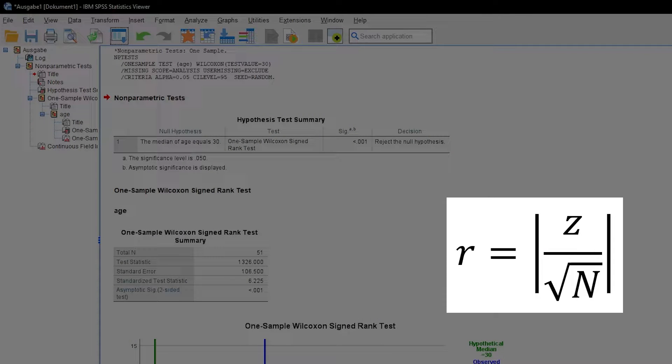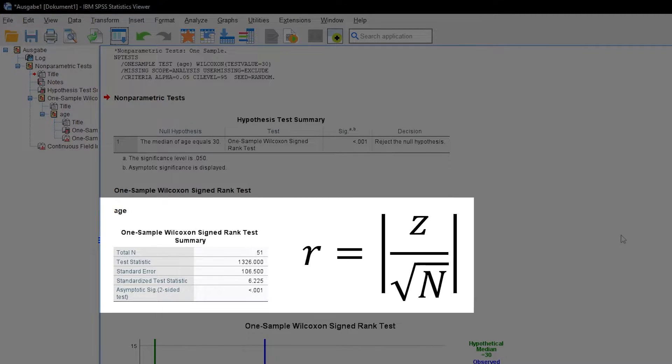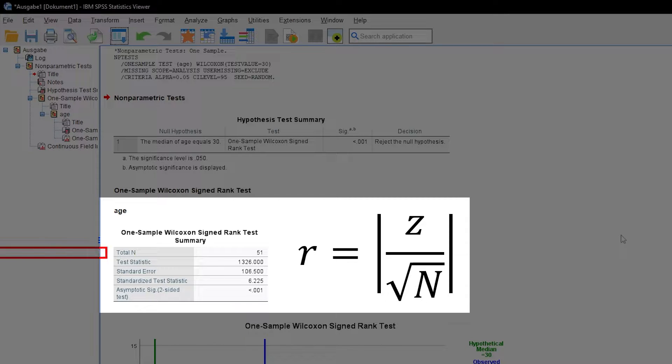For R, you need to divide the standardized test statistic Z by the square root of the number of observations. When we look closely in the second table, you can spot both total N being the number of observations and the standardized test statistic right above the significance.